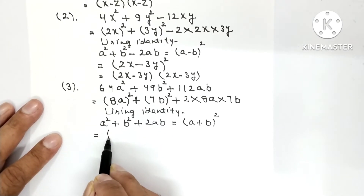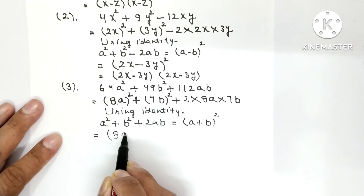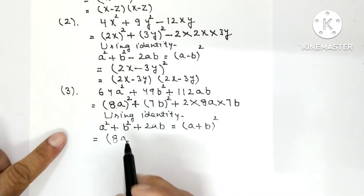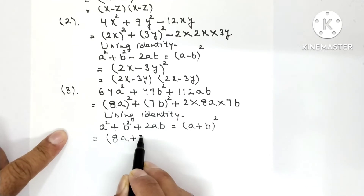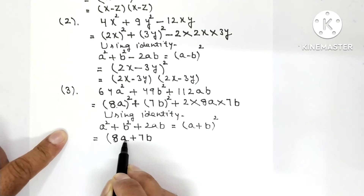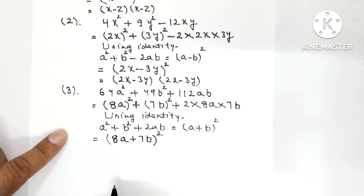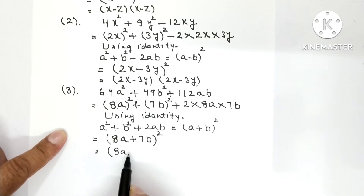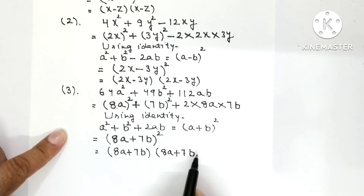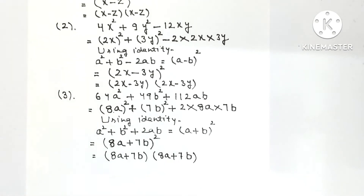So a is 8A and b is 7B. Using identity: a² + 2ab + b² = (a+b)², so the answer is (8A+7B)². Opening it: (8A+7B)(8A+7B). This is the factorization of Question 3.